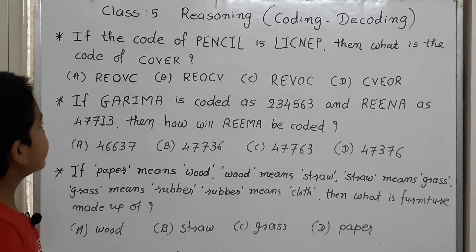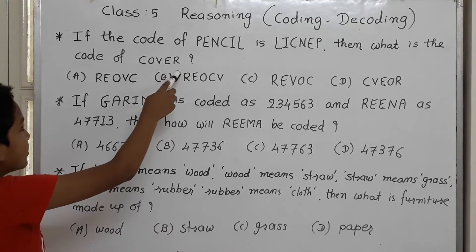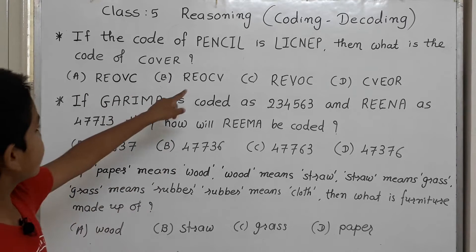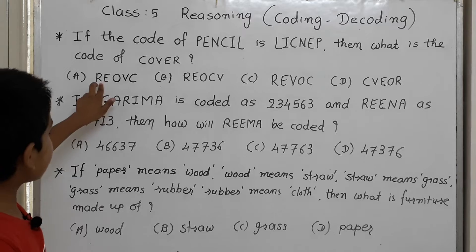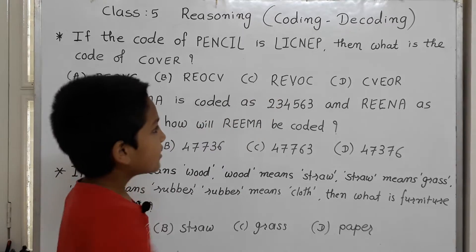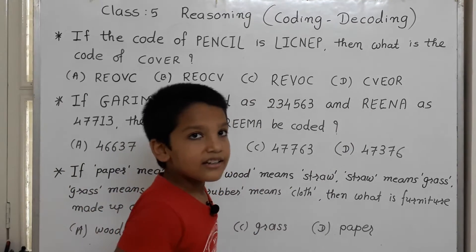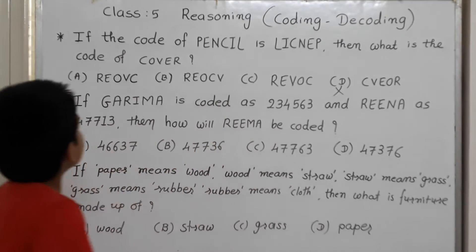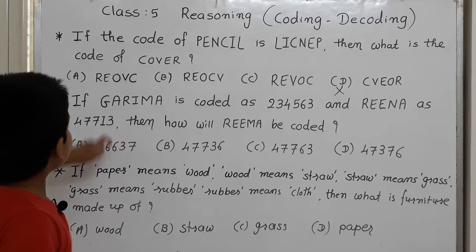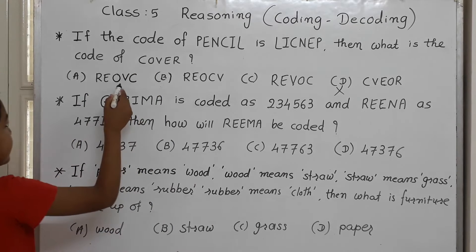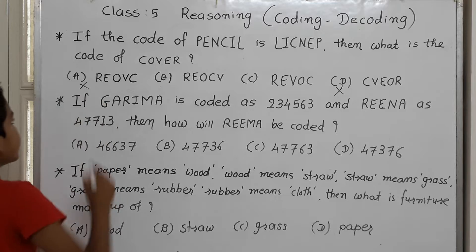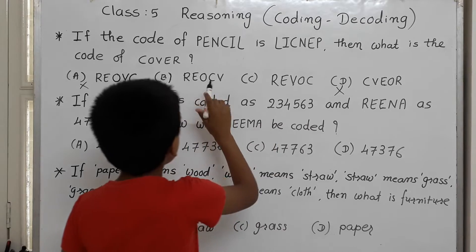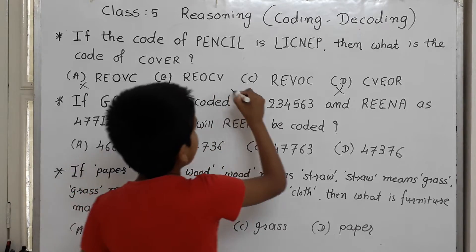In this, we have to do the same. So we check R-E at the start — the first two letters should match. Checking options: one option has no R-E at the last, so it is not our answer. Then we check V-O — here there is no V-O in some options. Eliminating those, this is our right answer.